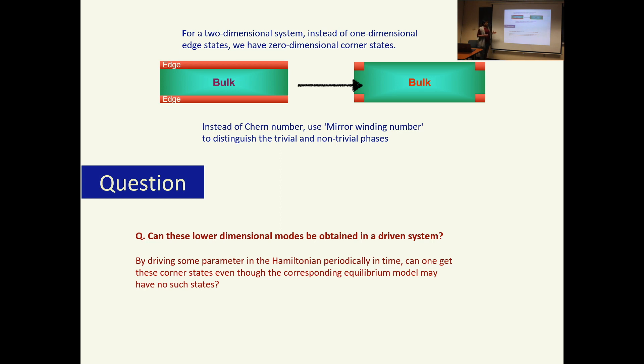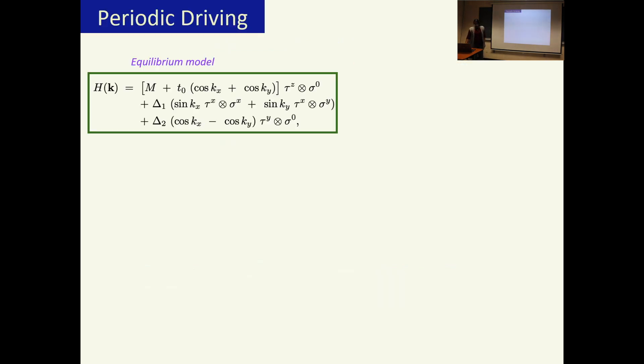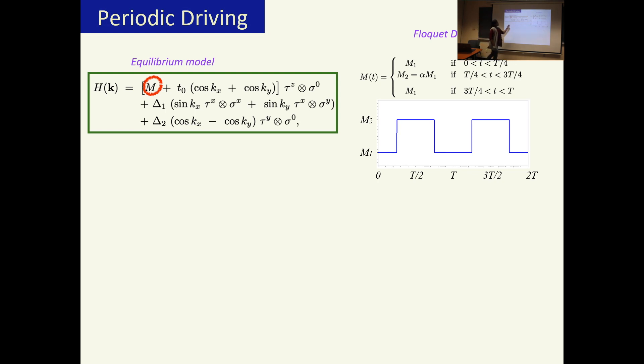So how do we drive this system? This is the equilibrium model we start with and we vary this mass term in the following way: from 0 to T/4 we have mass term as M1, from T/4 to 3T/4 we have mass term M2 which is somewhat higher than the earlier mass term, and from 3T/4 to T we have the mass term again M1.